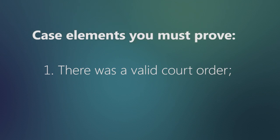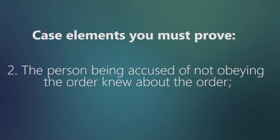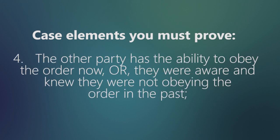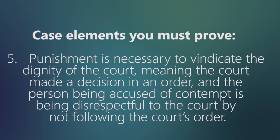Number one, there was a valid court order. Number two, the person being accused of not obeying the order knew about the order. Number three, the order has not been obeyed. Number four, the other party has the ability to obey the order now, or they were aware and knew they were not obeying the order in the past. Number five, punishment is necessary to vindicate the dignity of the court — meaning the court made a decision and the person being accused of contempt is being disrespectful to the court by not following the court's order.